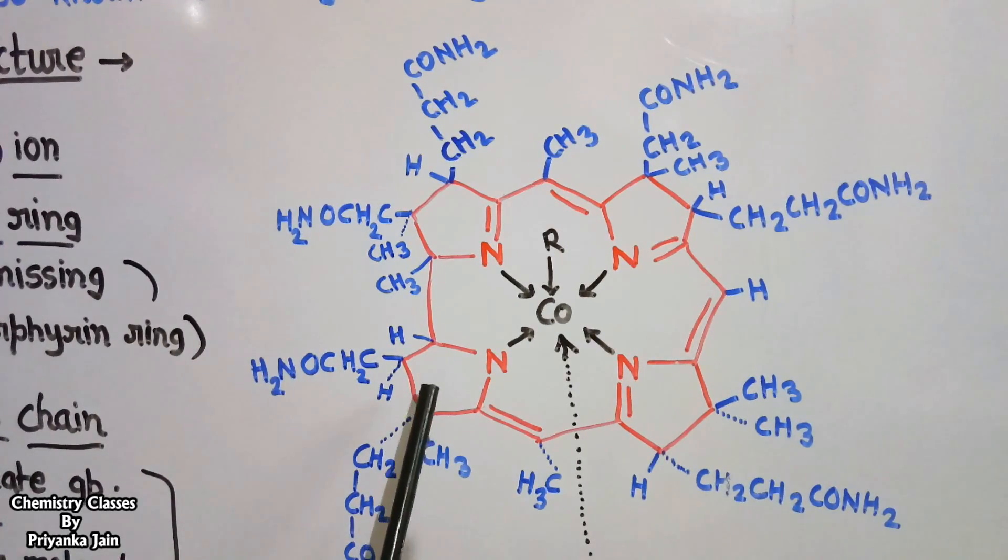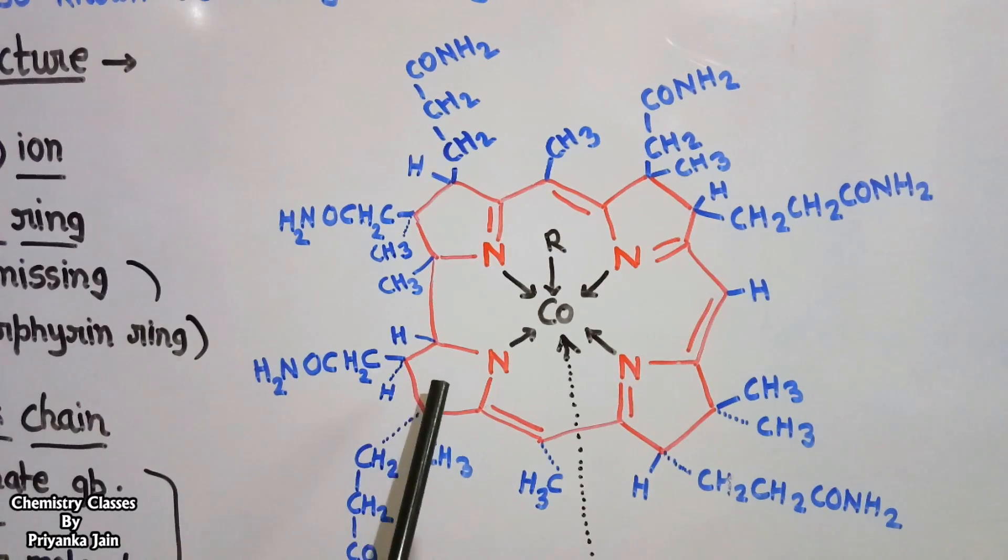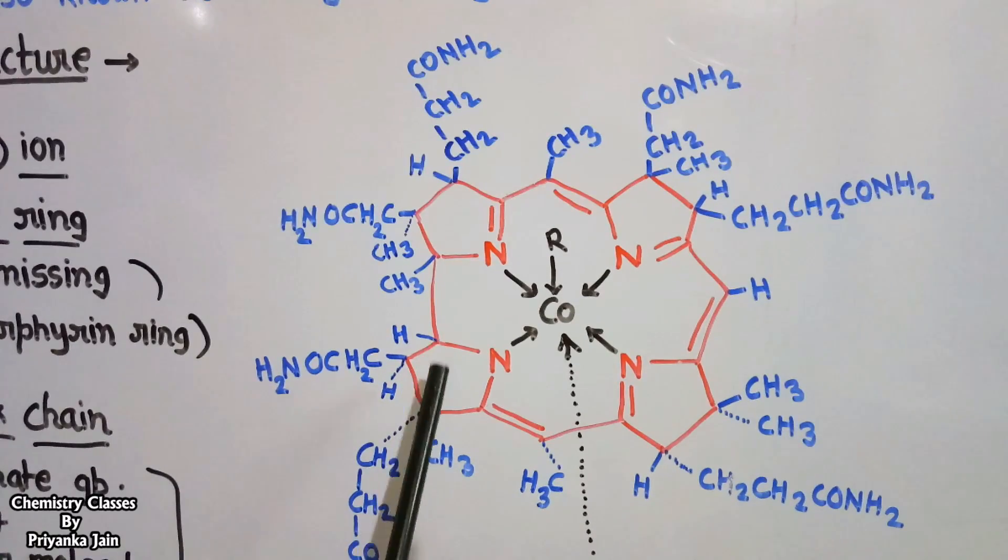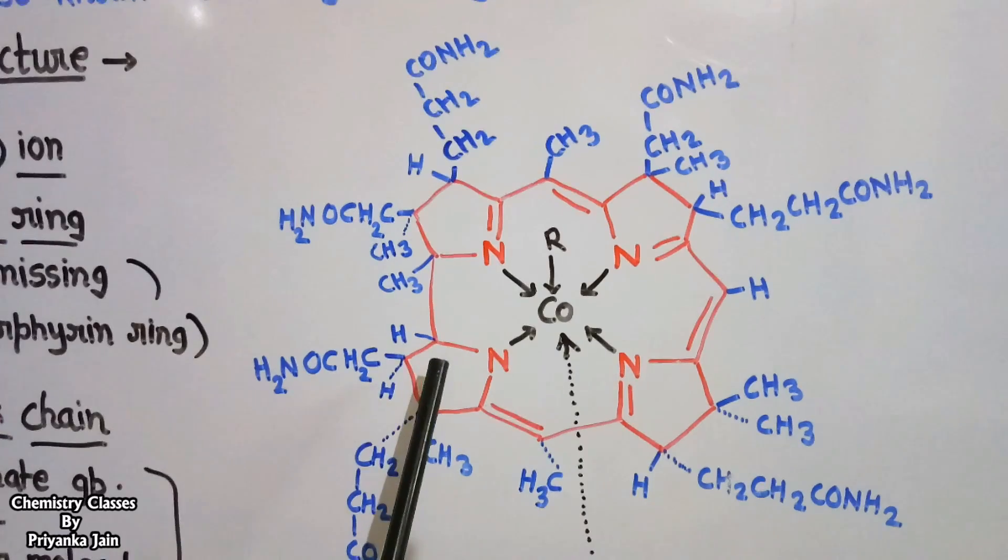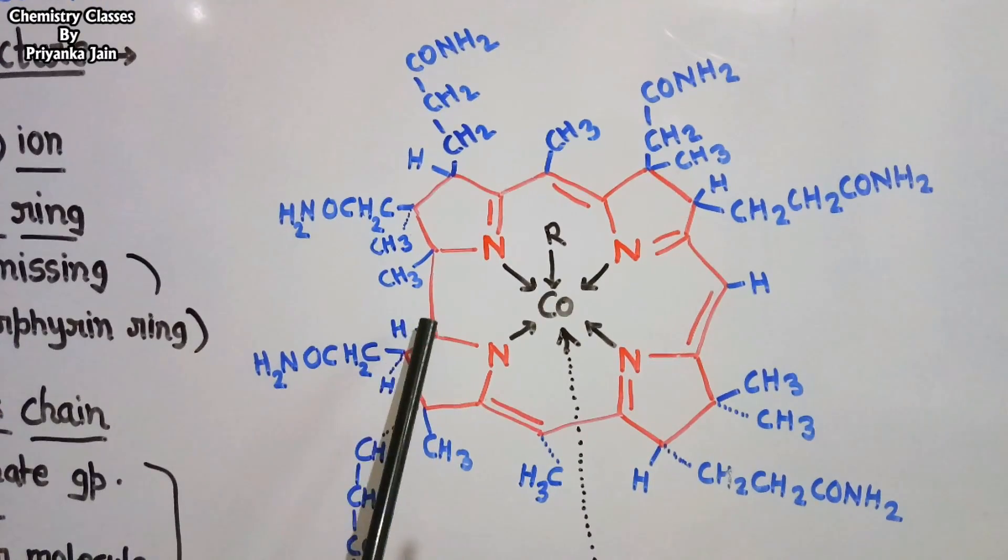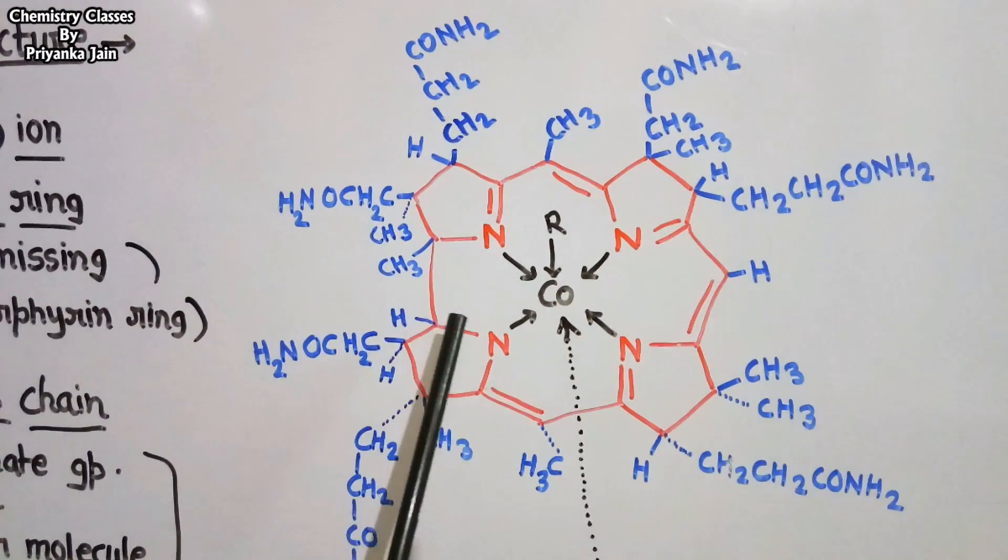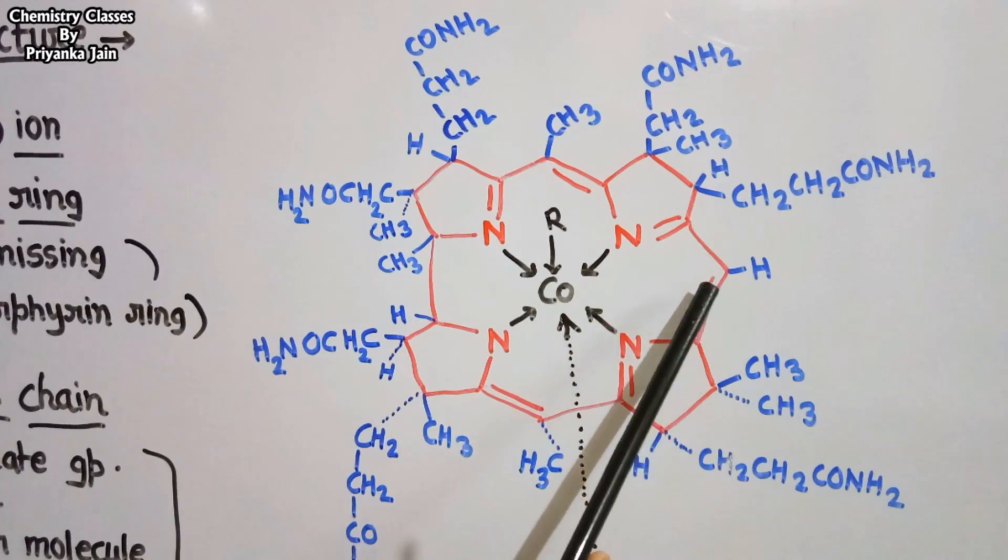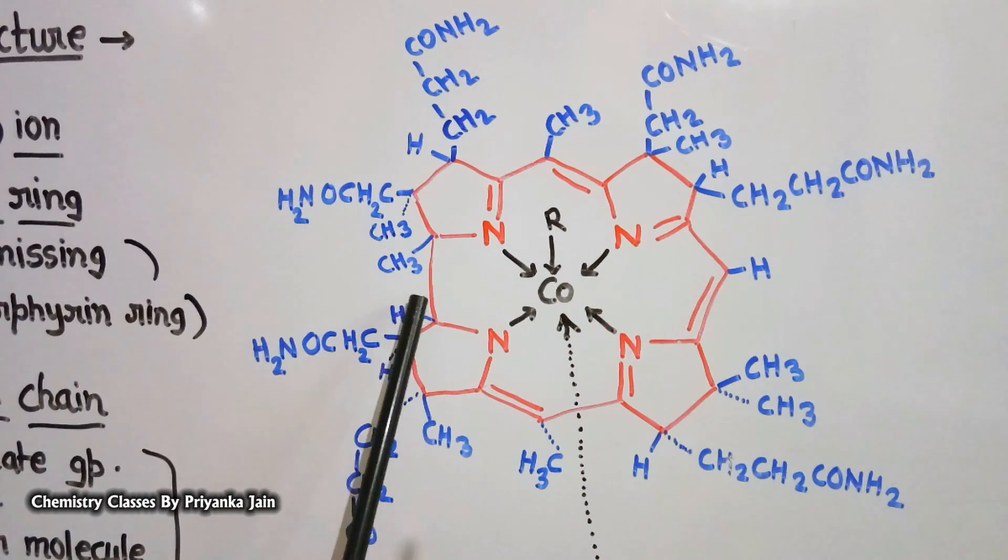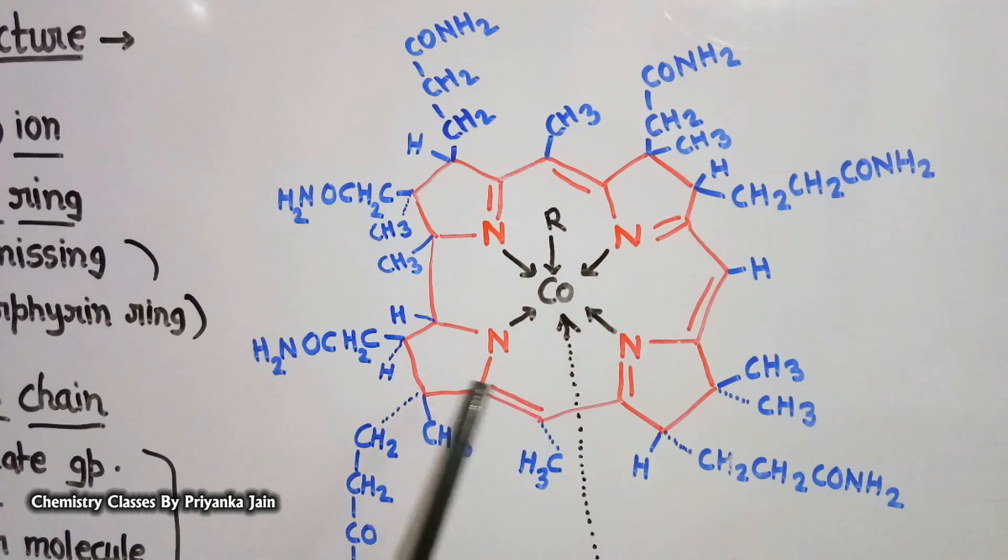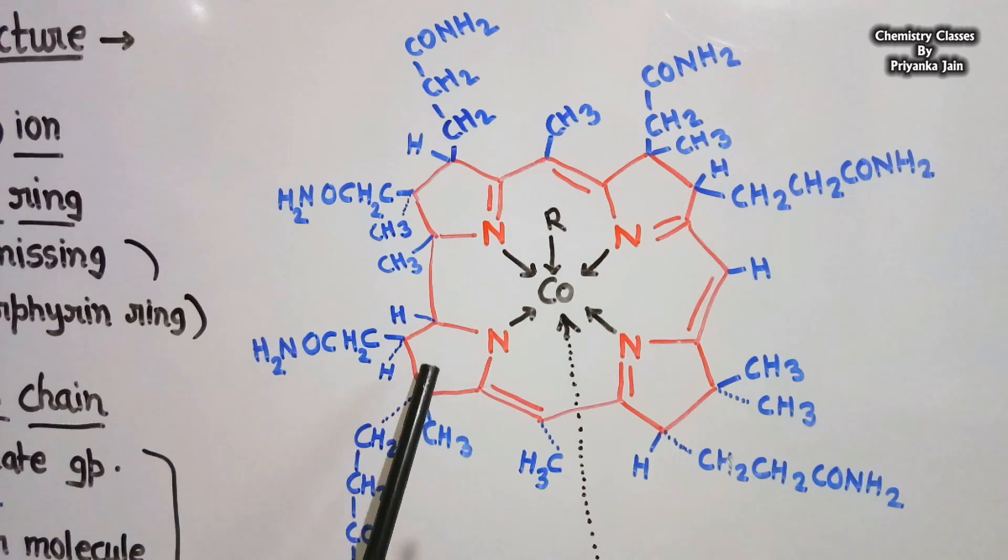And what is the difference between the corin ring and the porphyrin ring? It is similar to the porphyrin ring but has one CH group missing. Here there is a CH group, but here this is missing. This is the corin ring. We have denoted it by red color for your understanding.